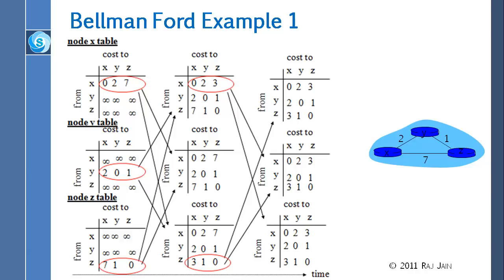The rule is: anytime your table changes, you tell the neighbors again. So x and z will tell their neighbors their tables have changed. When x gets the new table from z, it double-checks whether there's any faster way to reach y and z — nothing changes. Similarly z and y do the same calculation, nothing changes, and the program ends. Nobody sends anything more.